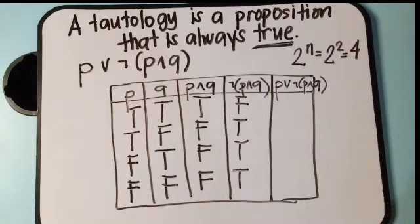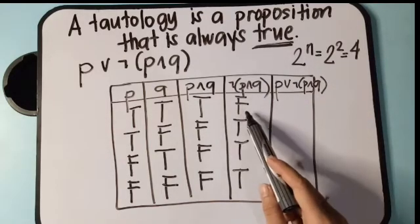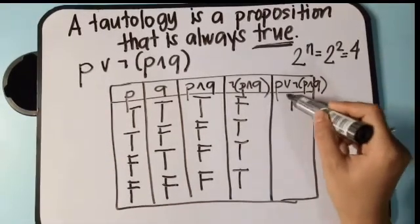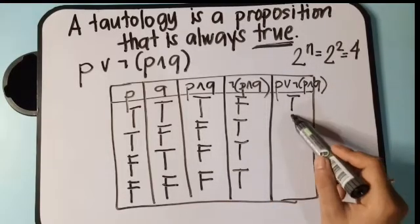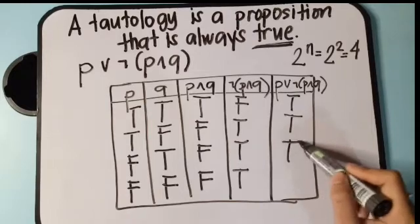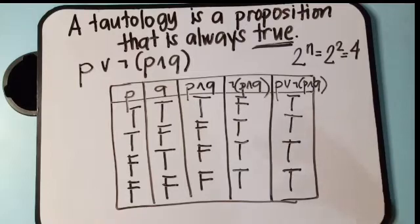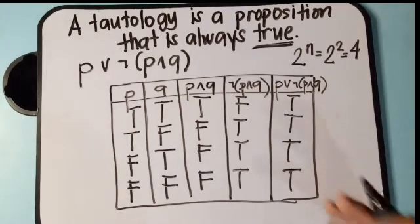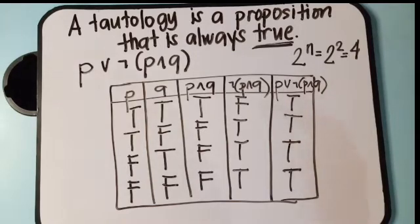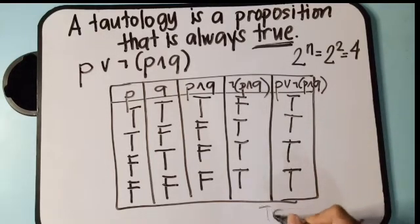Using the truth table for disjunction: true or false is true, false or true is true, false or true is true. All the answers are true — puro true. Therefore, this is a tautology. By showing the truth table, we prove that P or the negation of the conjunction P and Q is a tautology.